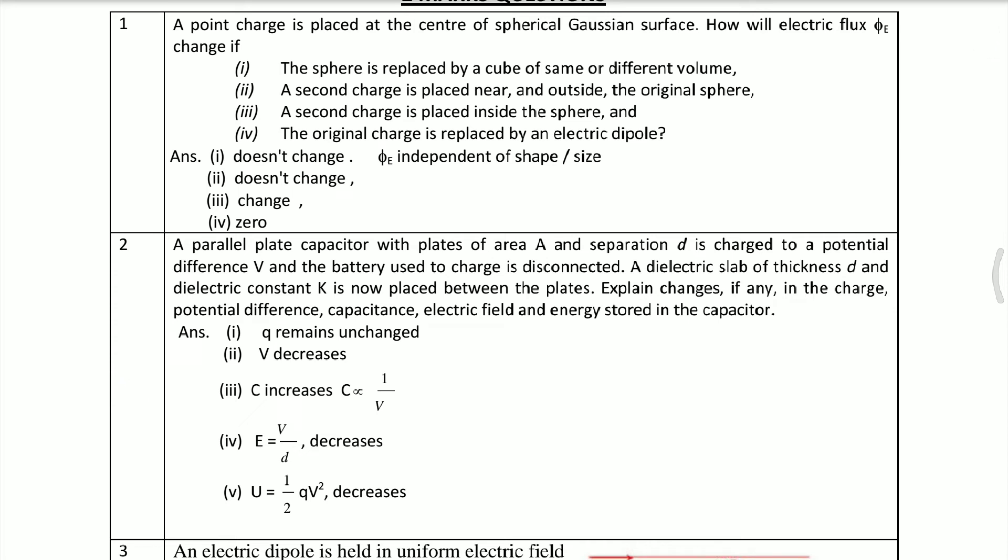First question is: A point charge is placed at the center of spherical Gaussian surface. How will electric flux change if: (a) the sphere is replaced by a cube of same or different volume, (b) a second charge is placed near and outside the original sphere, (c) a second charge is placed inside the sphere, and (d) the original charge is replaced by an electric dipole.